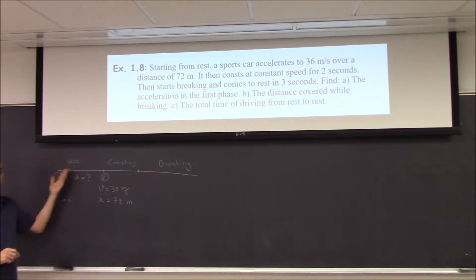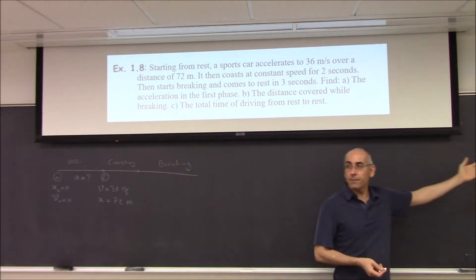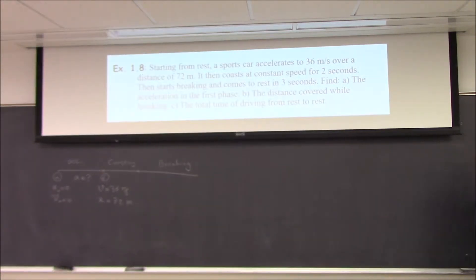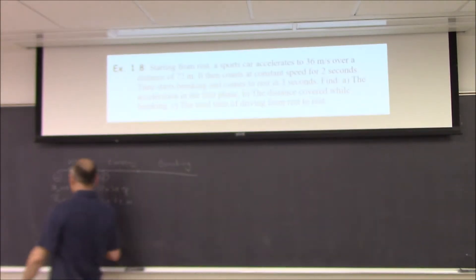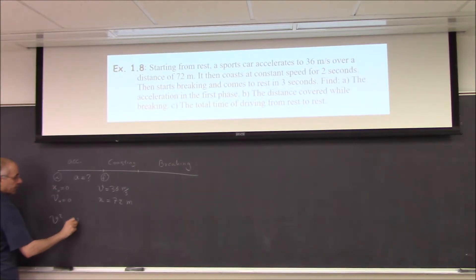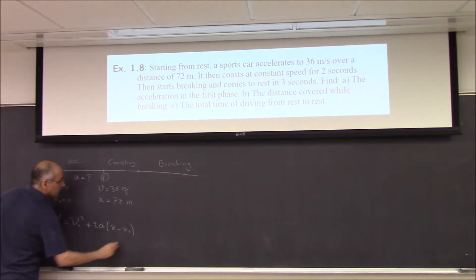What's missing? What's missing in this list? Something is not there. T. T, right? You see, either unknown or known. We don't know the time, and we don't care about time at this point. So the equation that doesn't have time will solve the problem. So, the time-independent equation, it says, v squared equal to v0 squared plus 2a times x minus x0.